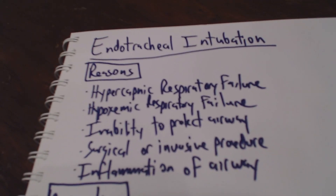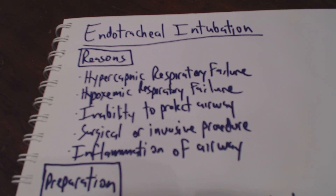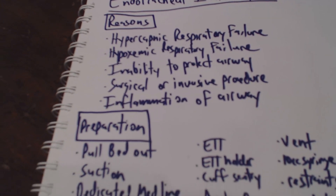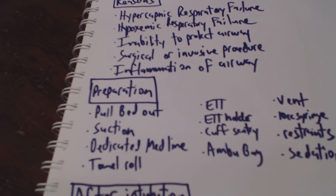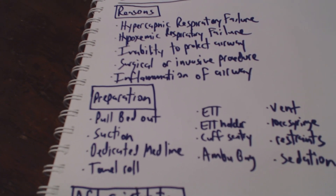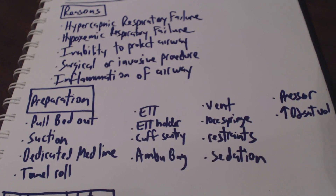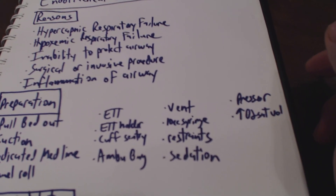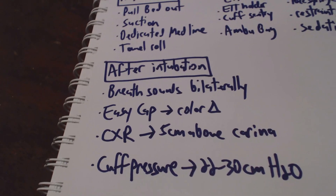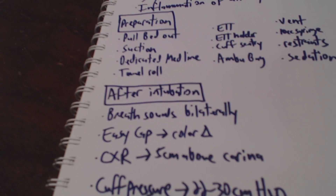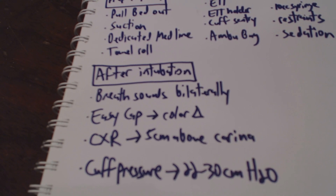Going over everything again: endotracheal intubation reasons include hypercapnic respiratory failure, hypoxemic respiratory failure, inability to protect airway, imminent surgical or invasive procedure, and inflammation of airway. For prep, we need to pull the bed out, have suction, dedicated medication line, towel roll, endotracheal tube, endotracheal tube holder, cuff sentry, ambu bag, vent, 10cc syringe, restraints, sedation, presser, and increase the O2 sat volume. After intubation: breath sounds bilaterally, easy cap and color change, chest x-ray with tip 5 centimeters above the carina, and cuff pressure 22 to 30 centimeters of water.